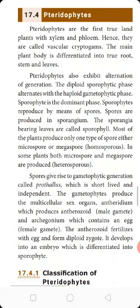The diploid sporophytic phase alternates with the haploid gametophytic phase. Sporophytes reproduce by means of spores, which are formed in sporangia. Spores are produced in sporangium.